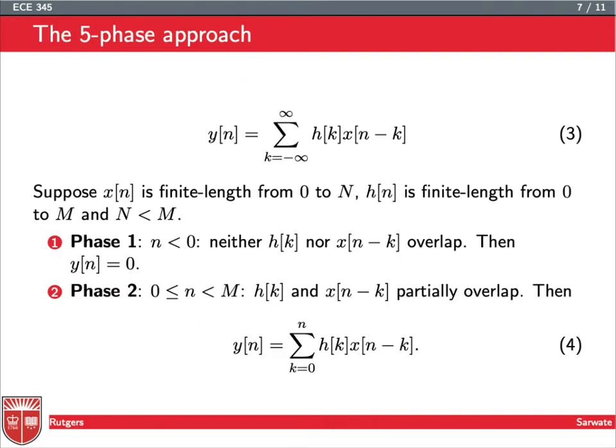In general, we can take a five-phase approach to computing these convolutions. These five phases correspond to when I slide x across: is there any overlap, partial overlap, or complete overlap between h and x? In phase 1, we can imagine here's my x, and here's my h. For n less than 0, there's no overlap between x and h, so the output is 0.